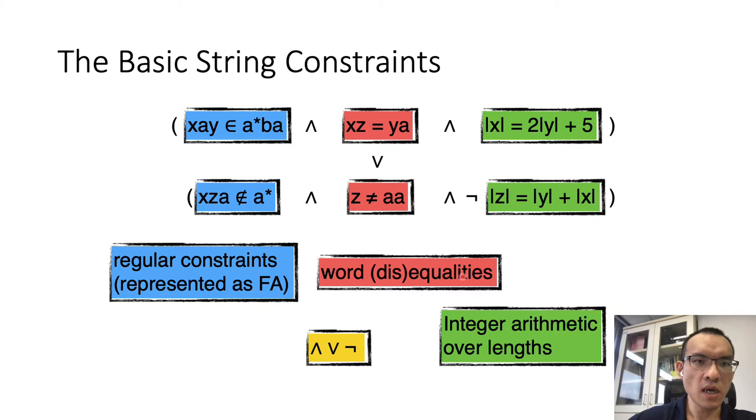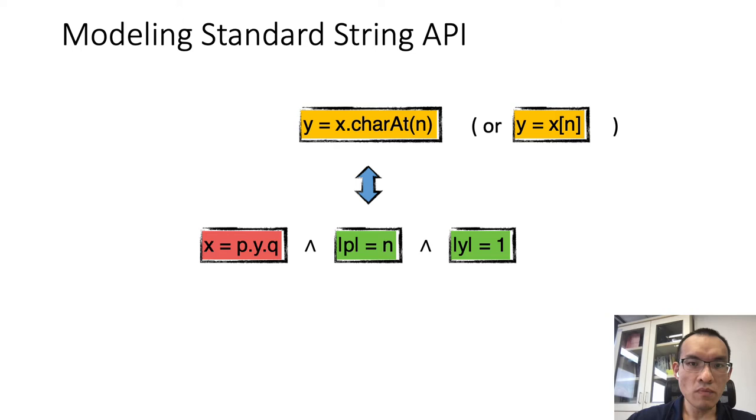The basic string constraints are very expressive. They are already enough to model many of the standard string APIs in programming languages. For instance, the command Y is equivalent to the nth character of X, or we can write it in this form. It can be expressed by the word equation X equals P, Y, Q, and the length constraint: the length of P is n and the length of Y is 1.